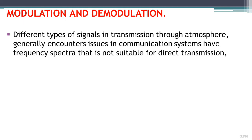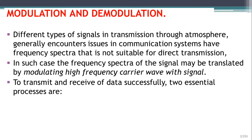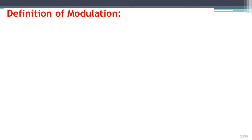The different types of signals transmitted through the atmosphere generally encounter issues in communication systems — they have frequency spectra that are not suitable for direct transmission. In such cases, the frequency spectra of a signal may be translated by modulating a high frequency carrier wave with the signal. To transmit and receive data successfully, there are two essential processes: modulation and demodulation.